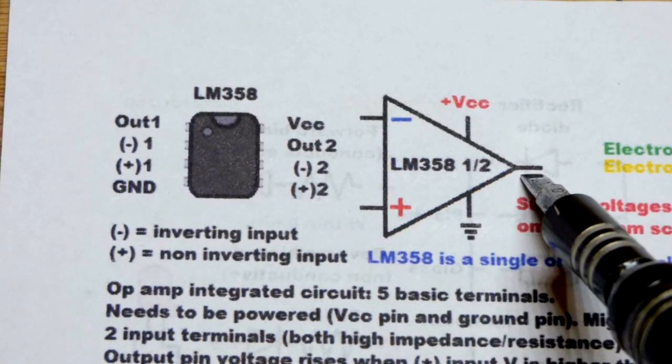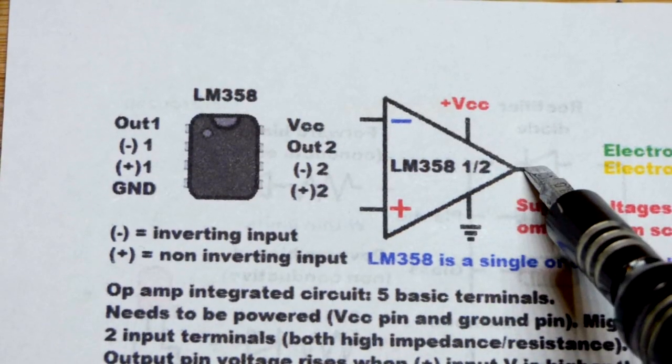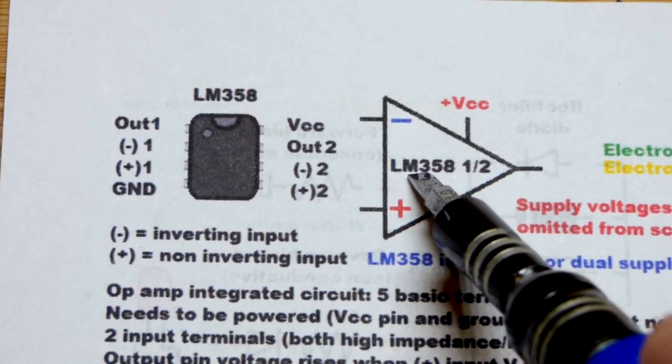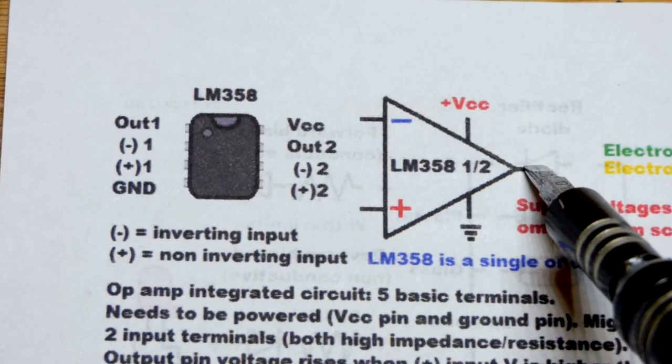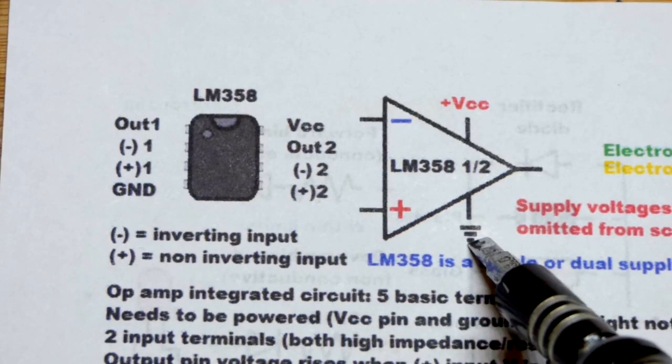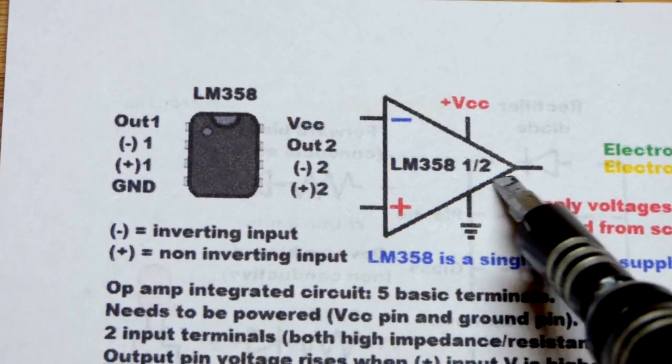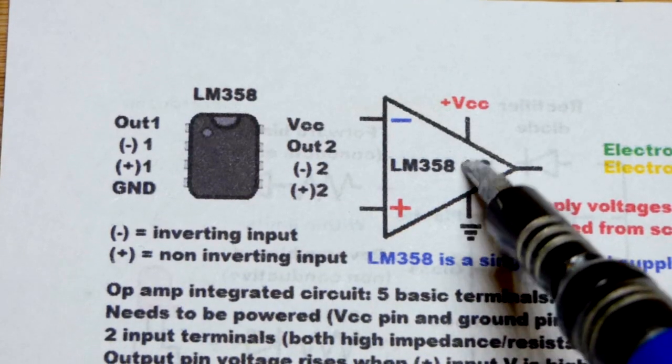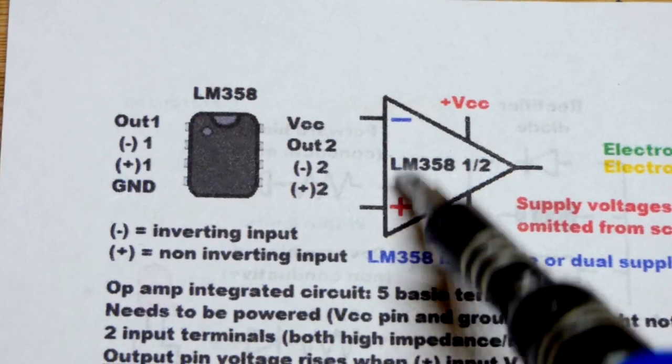Now we have, let's do the output first. The output either connects as close as it can to the positive supply, and it usually falls short - it does with the LM358. Maybe if you got five volts maybe it outputs four. I don't know the exact voltage but it falls a bit short. It can also go all the way down to the negative supply, which is ground in this case - zero volts. It can make a really good connection directly to ground there. You can get about zero volts out there. Now you can get anywhere in between those two voltages. The way that you set the output voltage depends on the inputs.